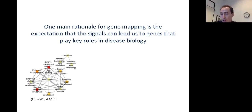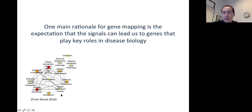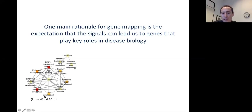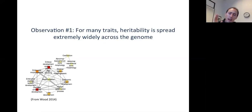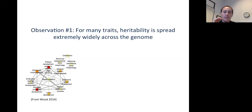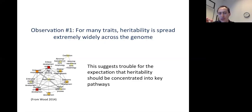For example, for the C4 gene in schizophrenia. There have also been studies that looked at gene set enrichment among the top hits from GWAS studies and identified gene sets that make sense — this figure from the 2014 meta-analysis for height identifies a number of different kinds of gene sets that do make intuitive sense. However, one observation is that for a lot of traits, the heritability is spread very, very widely across the genome, which suggests trouble for the expectation that heritability will be concentrated into key pathways.